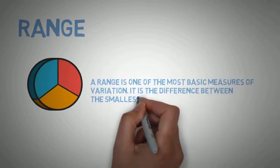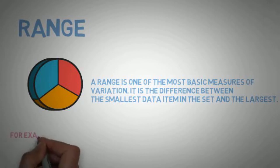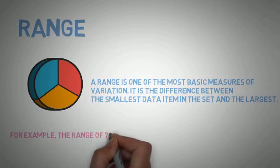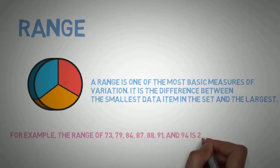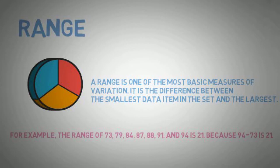Let's go through them one by one. First, range — it is one of the most basic measures of variation. It is the difference between the smallest data item in the set and the largest. For example, taking this list of numbers, 93 is the largest and 21 is the smallest, so we just subtract to find the range, which is 72.